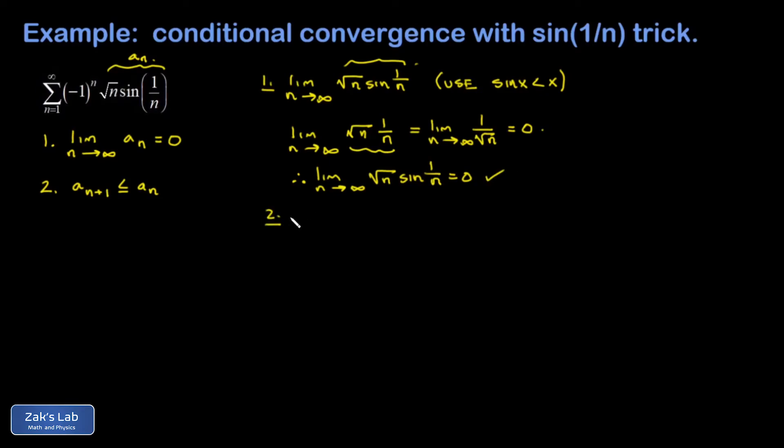Then we move into part 2, which in practice is the hard part. The standard method for showing that the terms are decreasing is to talk about the function that's generating the terms of this series: f of x is square root x sine 1 over x. When you evaluate this function at x equals 1, x equals 2, and so on, you're generating the terms of the series. If we can show that this is a decreasing function, then that means the terms of the series are decreasing as well. The way we do this is to take the first derivative and show that it's negative.